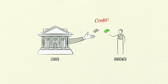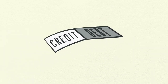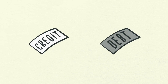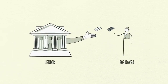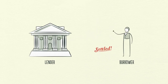Any two people can agree to create credit out of thin air. Credit is tricky because it has different names. As soon as credit is created, it immediately turns into debt. Debt is both an asset to the lender and a liability to the borrower. In the future, when the borrower repays the loan plus interest, the asset and the liability disappear and the transaction is settled.